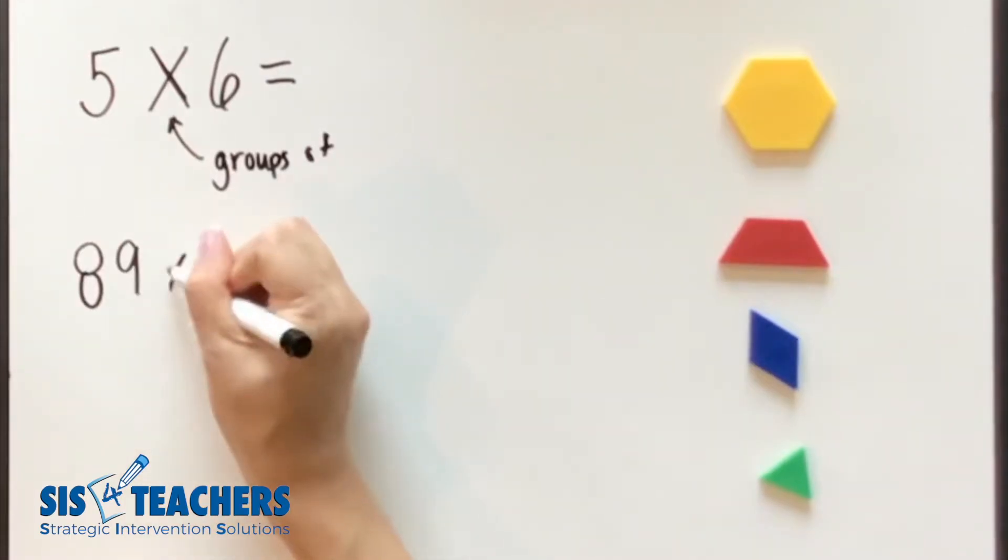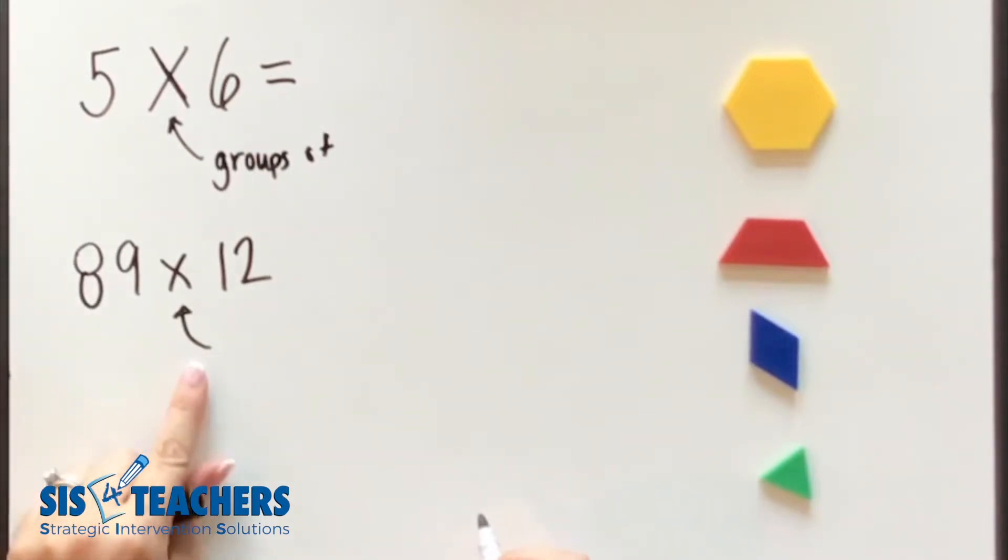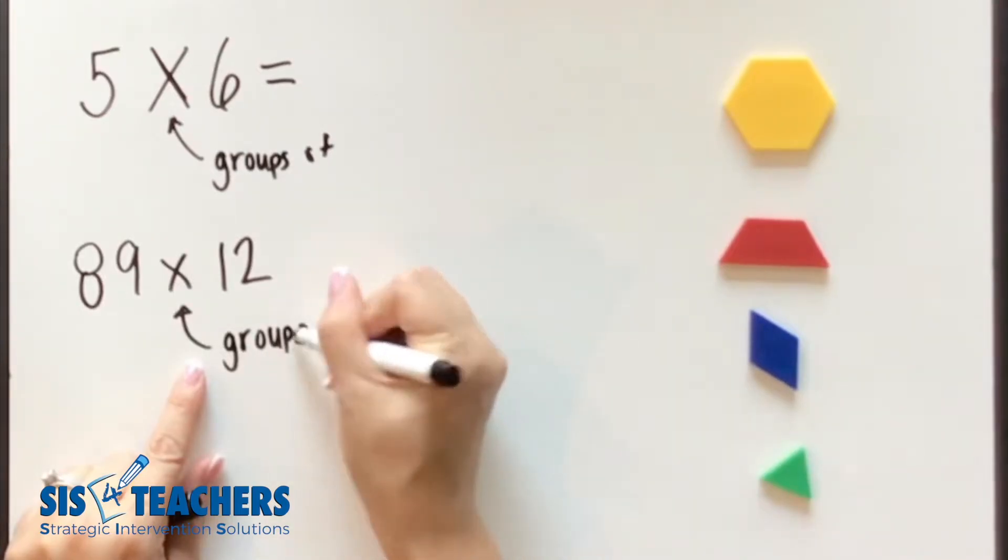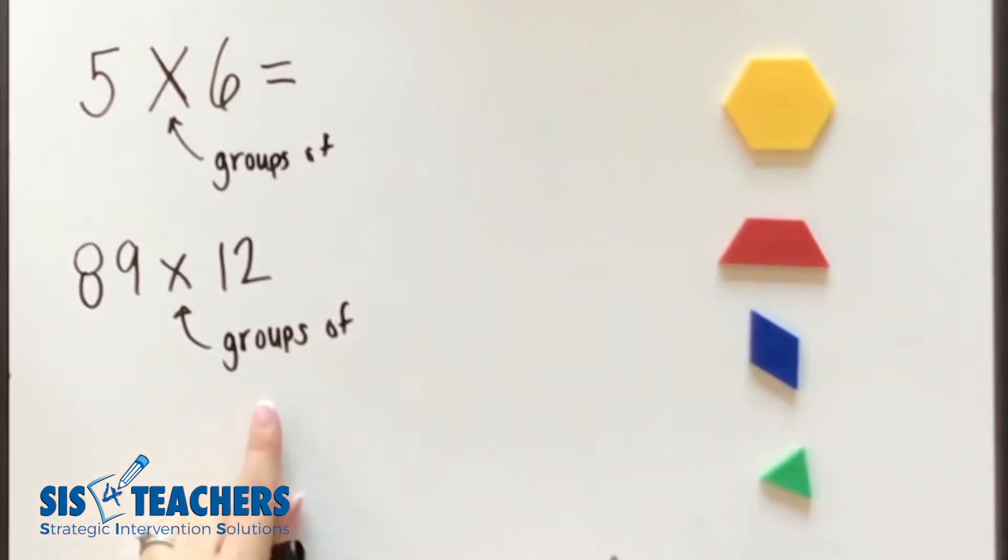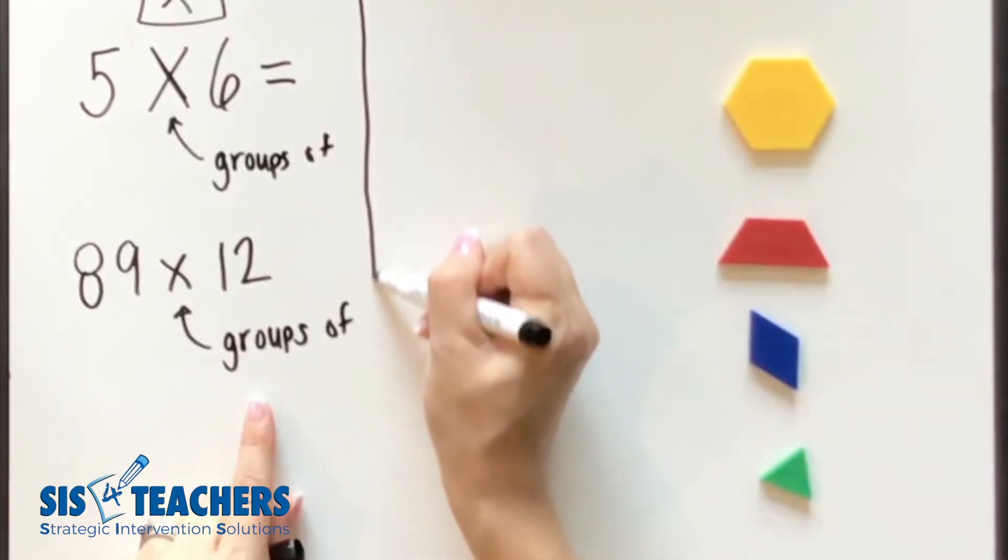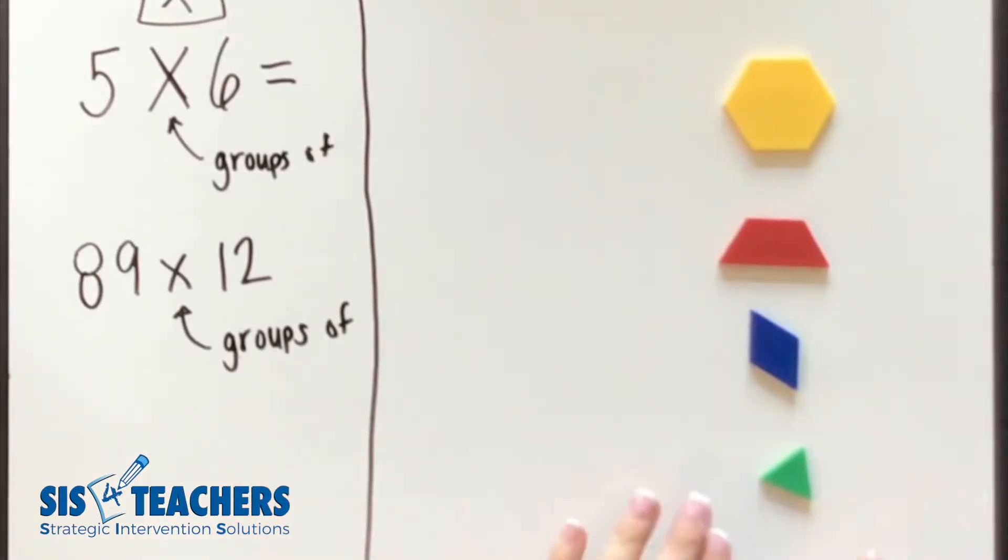Let's look at 89 times 12. What does this mean? This means 89 groups of 12. So if we keep that in mind as we start to learn more about how to multiply fractions and take what we already have learned in multiplication, it will help us to apply what we're doing in the multiplication of fractions.